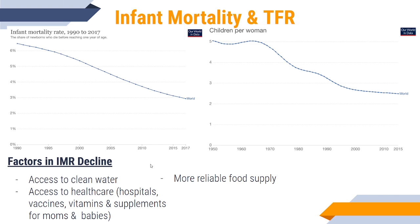What brings down mortality rates among infants and children is anything that allows for better survival. In our population, that's going to be access to food and a more reliable food supply, access to clean water, waste removal systems — the advent of indoor plumbing is usually one of the biggest ones. Also access to healthcare, hospitals and doctors, vaccines, prenatal care, supplements for mothers and pregnant women, as well as access to obstetricians and prenatal doctor care.